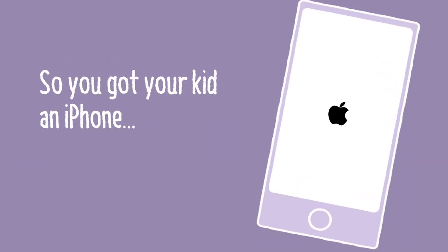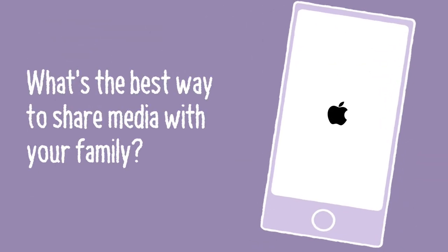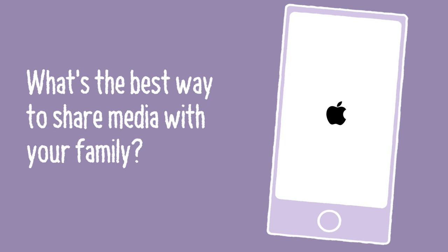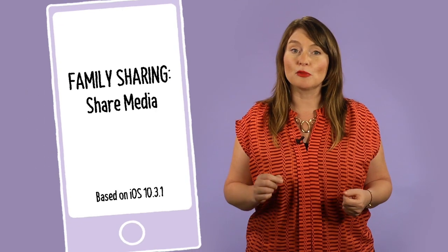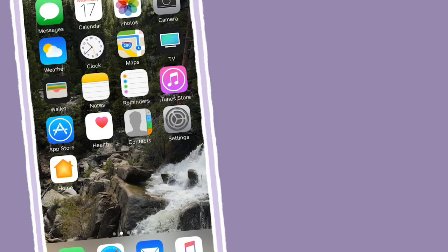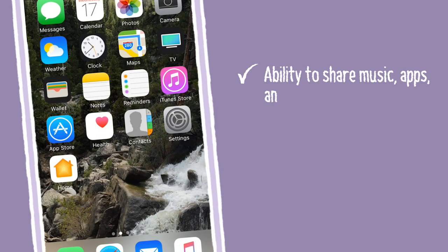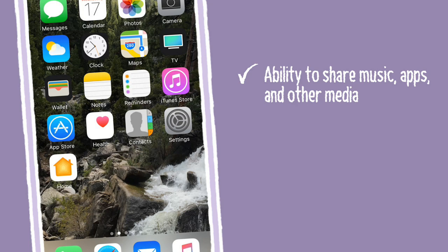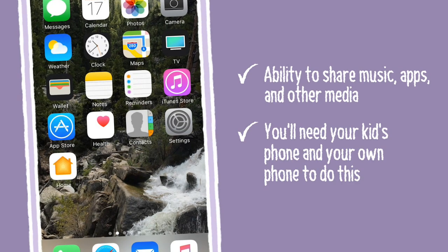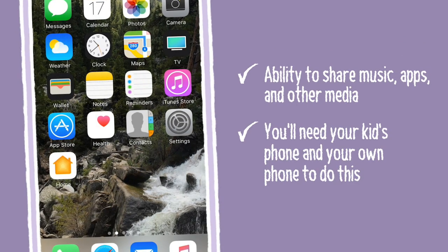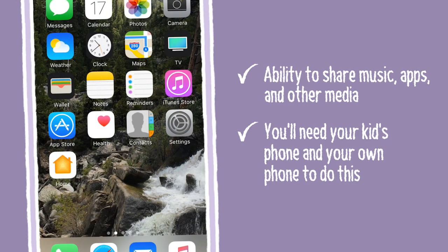So you got your kid an iPhone. What's the best way to share media with your family? You can set up Family Sharing, which is built right into the phone. Family Sharing lets you share music, apps, and other media. You'll need your kid's phone and your own phone to do this.